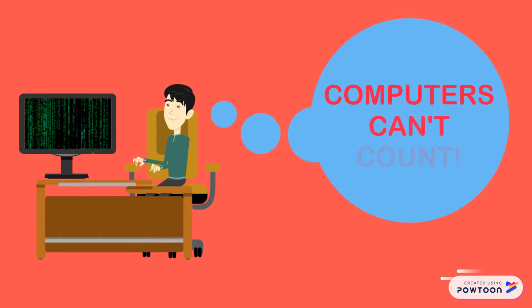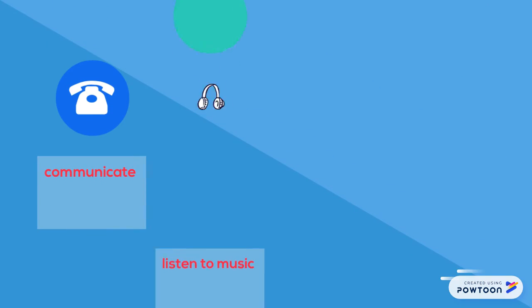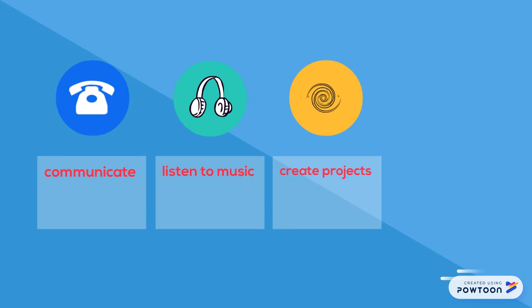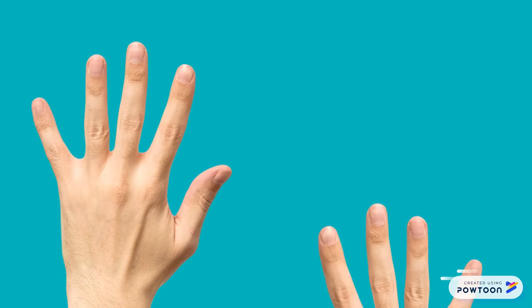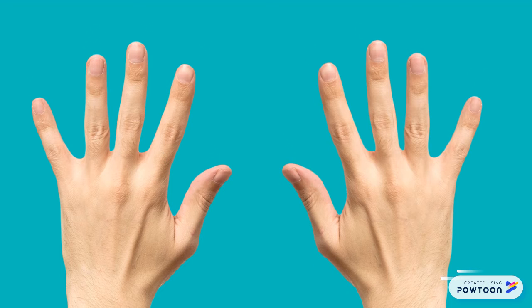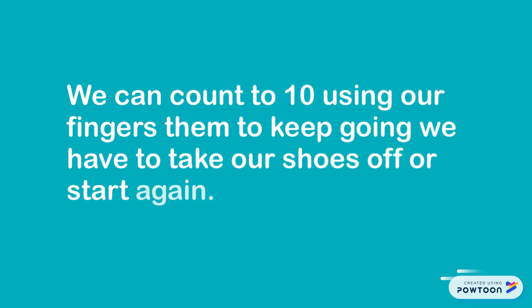Computers cannot count, not the way that we do anyway. Computers can help us communicate, listen to music, create projects and surf the web, but they don't count how we do. Let's look at our hands — we know we have 10 fingers and this is why we count in what is called base 10. We can count to 10 using our fingers then continue; we either have to take our shoes off or start again.